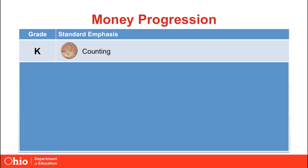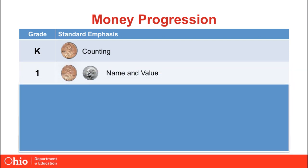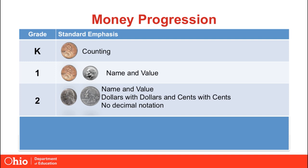Kindergarteners used pennies to count and sort pennies to reinforce one-to-one correspondence. First graders used dimes and pennies to reinforce counting by tens. In second grade, students add to their knowledge the name and value of nickels and quarters. They are to add dollars with dollars and cents with cents. For example, they could add 95 cents and 35 cents to get 130 cents. They do not use decimal notation here since they haven't learned about decimals yet.